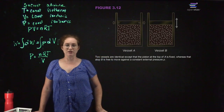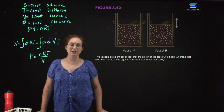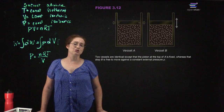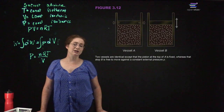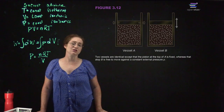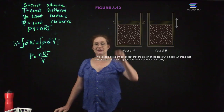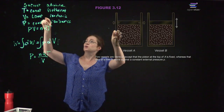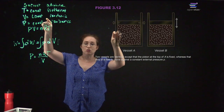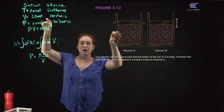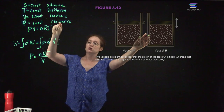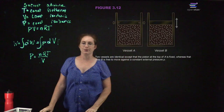Two vessels are identical, except that the piston at the top of A is fixed, while the piston at the top of B is free to move against a constant external pressure. In case A, this is constant volume, so that is isochoric. In case B, it is constant pressure, so it is isobaric.